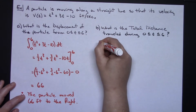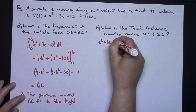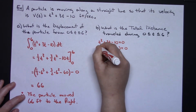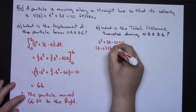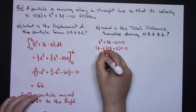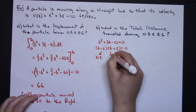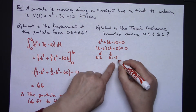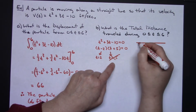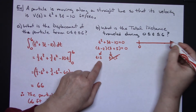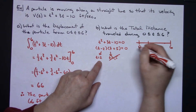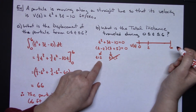I'm going to take t squared plus 3t minus 10 and set it equal to zero, because hopefully this factors nicely. I get t minus 2 times t plus 5, giving t equals 2 and t equals negative 5. Since t equals negative 5 is not in my interval, I don't need to deal with it. So from 0 to 6, the critical value is t equals 2.